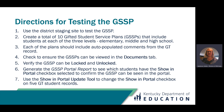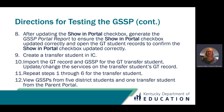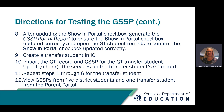Use the Show in Portal update tool to change the Show in Portal checkbox on five GT student records. After updating the Show in Portal checkbox, generate the GSSP Portal Report to ensure it updated correctly, and open the GT student records to confirm. Then create a transfer student in Infinite Campus, import the GT record and Gifted Student Service Plan, and update the services on the transfer student's GT record. Repeat steps one through six for the transfer student, and finally view GSSPs from five district students and one transfer student from the parent portal.